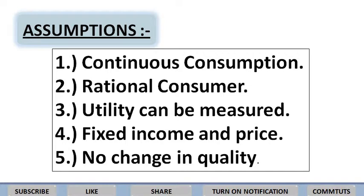यह law कुछ assumptions के ऊपर based है। सबसे पहली assumption है continuous consumption — law of diminishing marginal utility में assume किया जाता है कि consumption एक continuous process है। It is assumed that consumption of the commodity is continuous — याने किसी भी commodity को लगातार consume करते जा रहे हो। Note that one unit is not consumed now and the other tomorrow; there must be continuity in consumption.